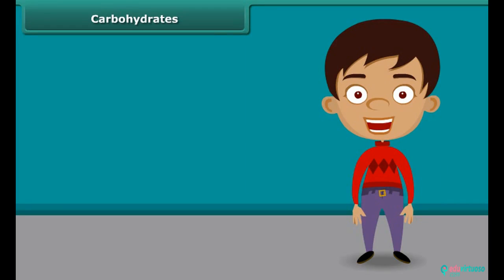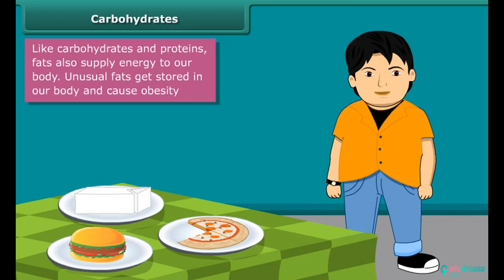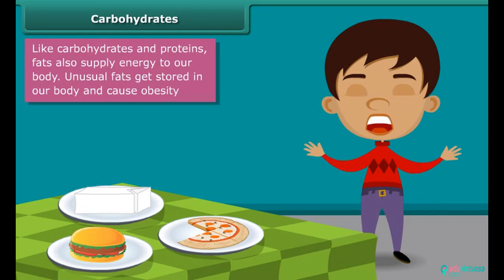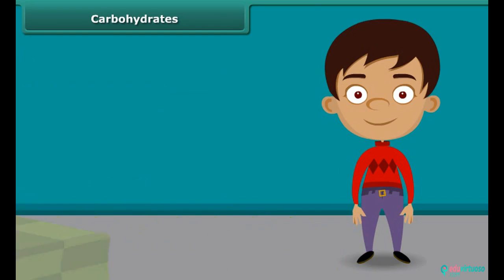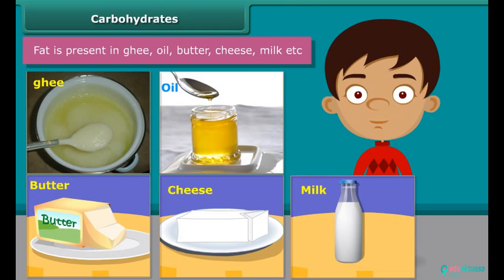Many children love pizza, burger, cheese, etc., but parents do not allow eating them regularly because such foods contain large amounts of fat. Fat supplies us with energy. If we don't use up this energy, our bodies build up a store for future use in the form of body fat. This is the reason why people eating much oily food become obese. Ghee, oil, butter, cheese and milk are some main sources of fats.